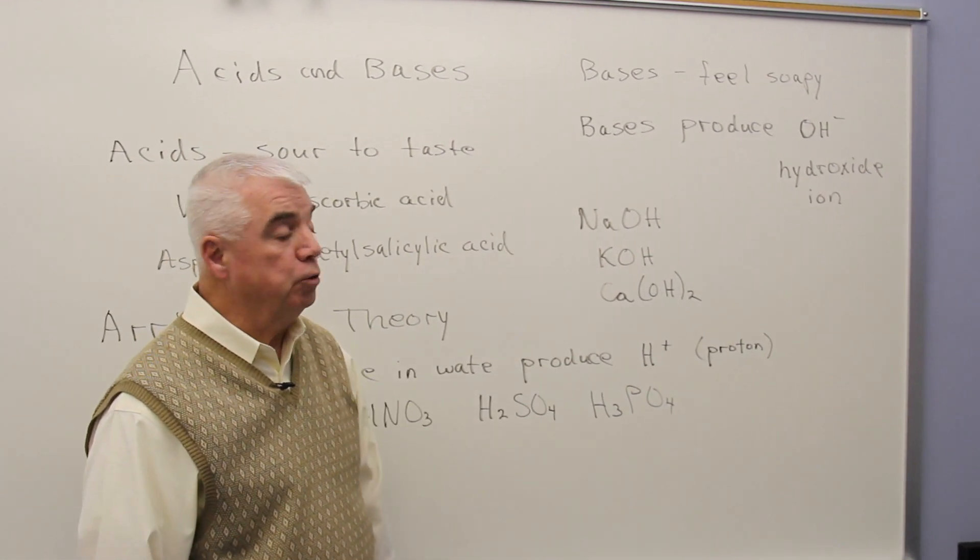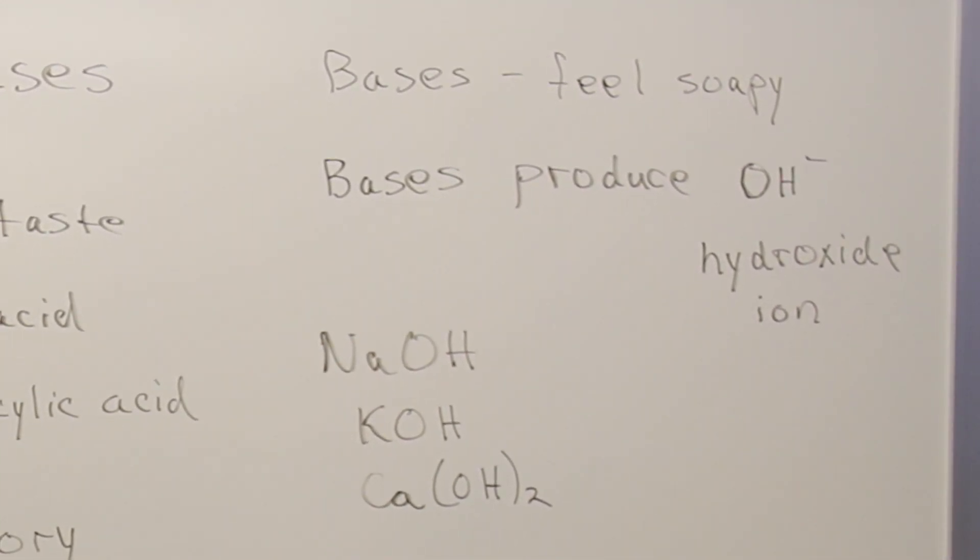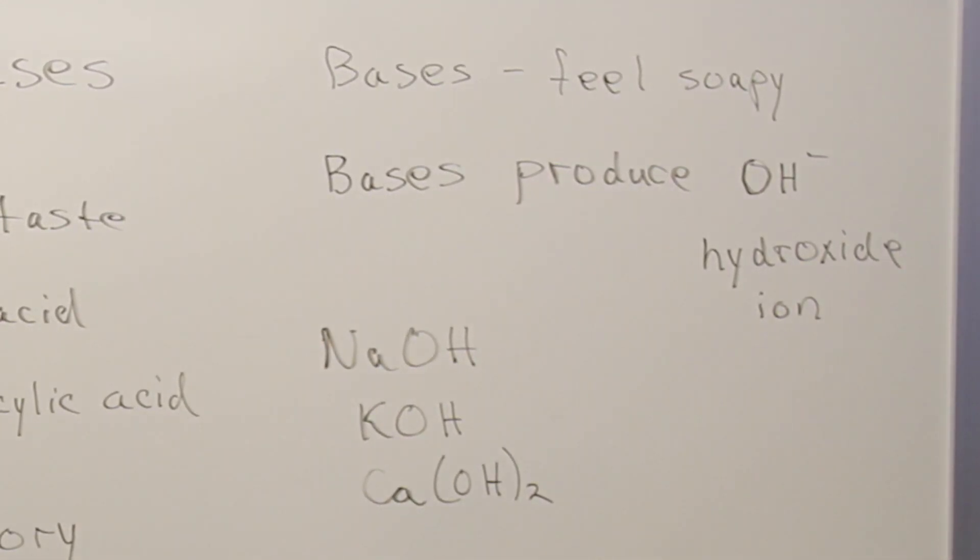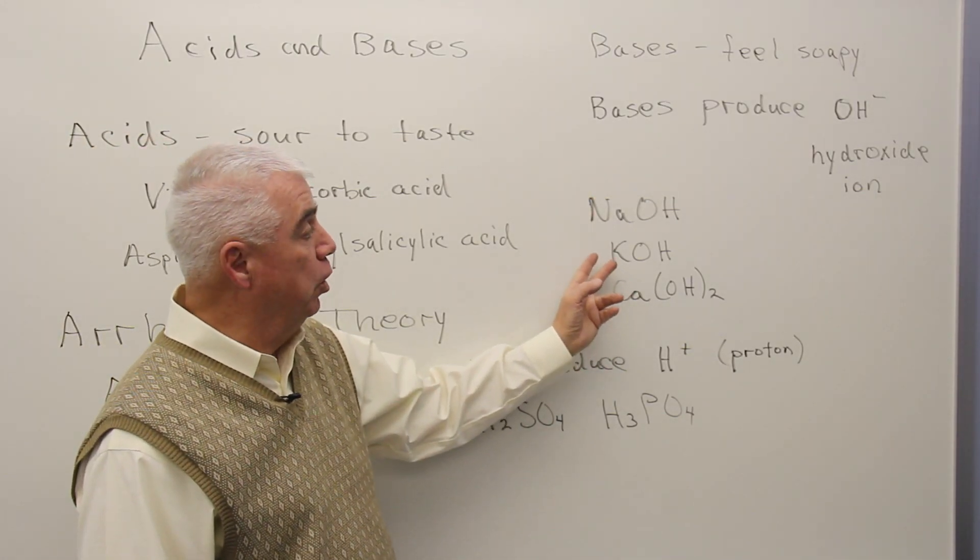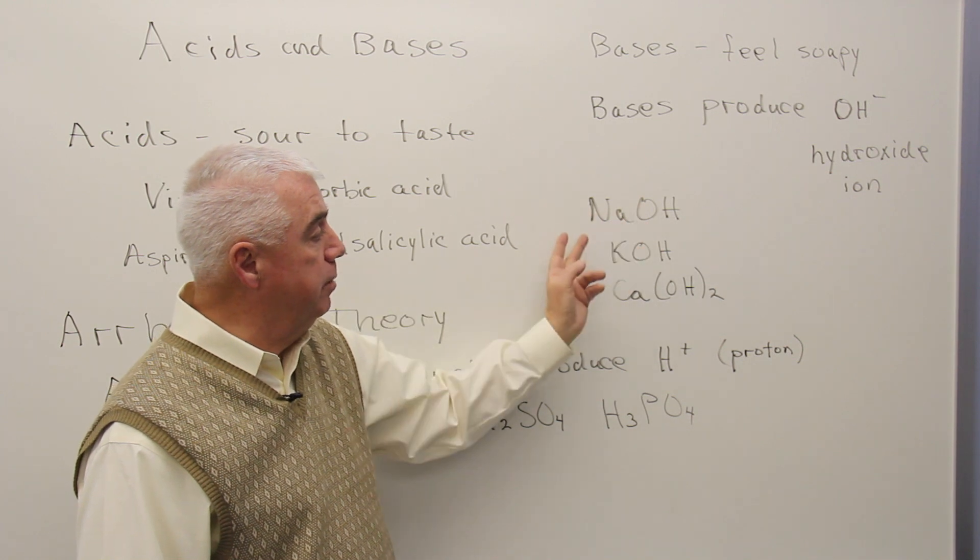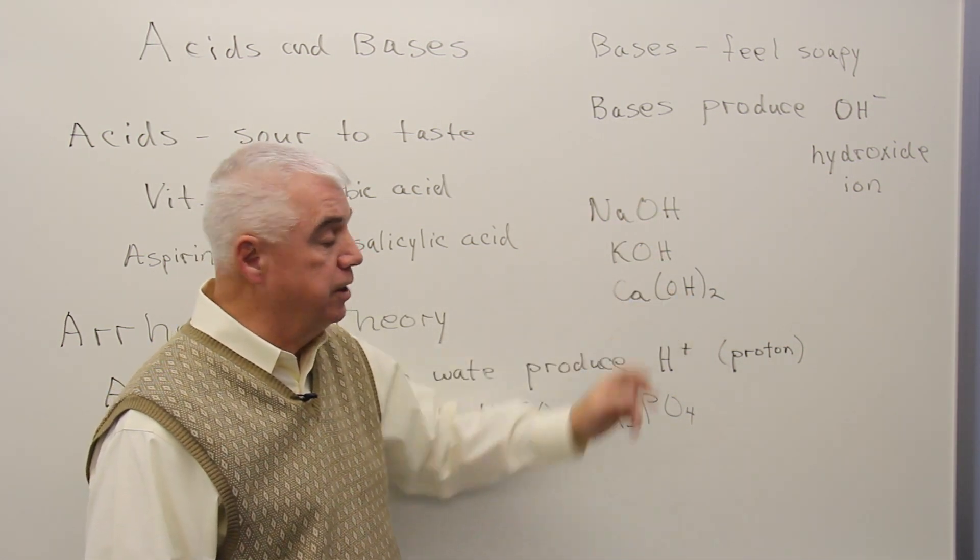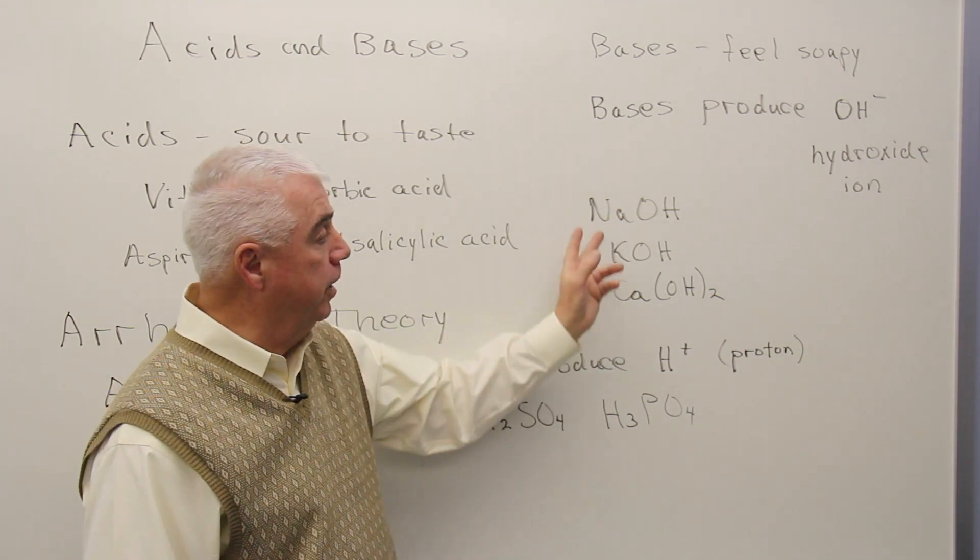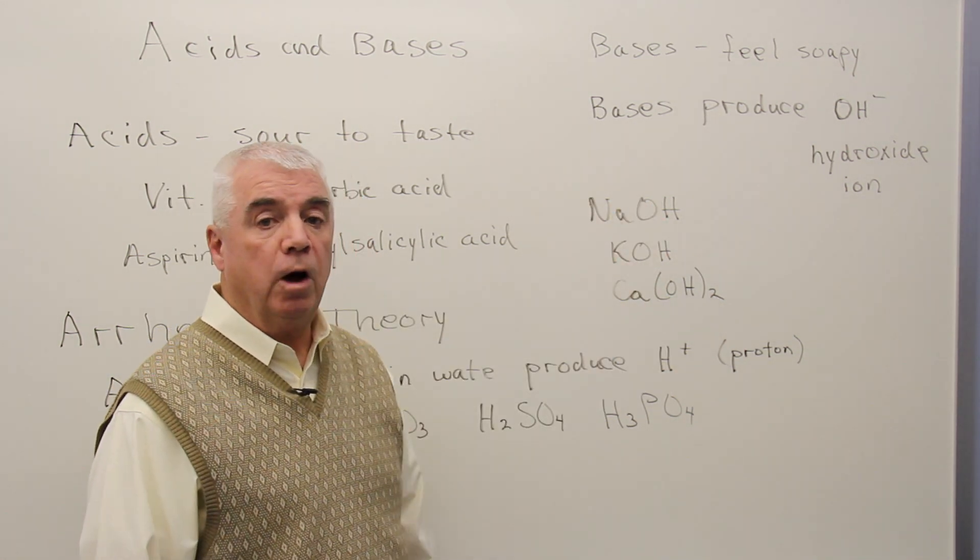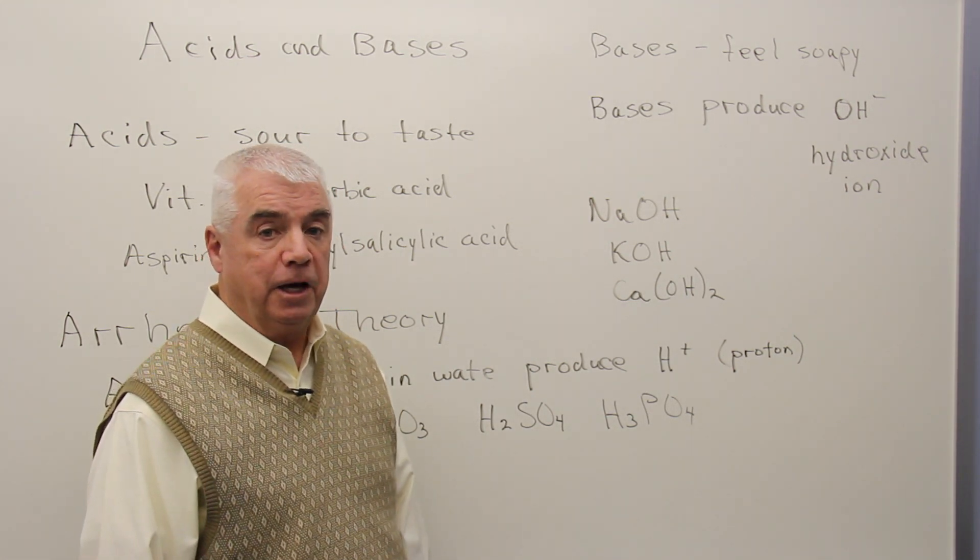Arrhenius said that bases produce OH-, that's the polyatomic ion hydroxide. Here are some classic examples of Arrhenius bases: sodium hydroxide, potassium hydroxide, calcium hydroxide. Just about any metal that you could think of, if it's got the hydroxide polyatomic ion with it, would be an Arrhenius base.